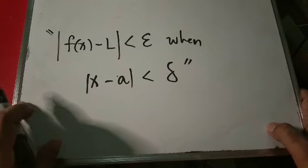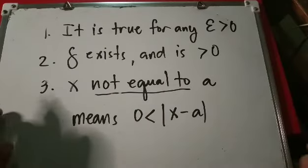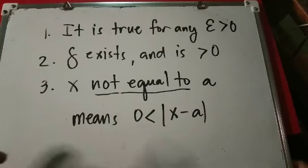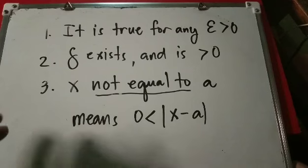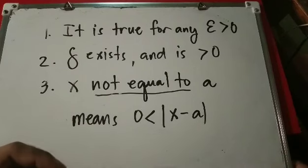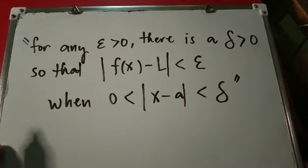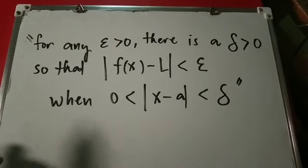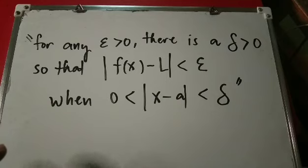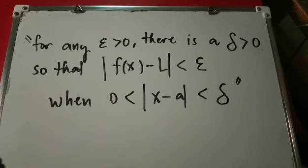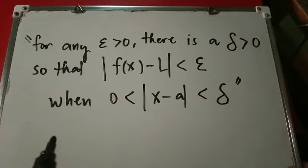If you understand that, you understand limits. But to be absolutely precise we need to add these conditions: number one, it is true for any epsilon greater than zero; number two, delta exists and is greater than zero; number three, x not equal to a means zero is less than the absolute value of x minus a. So the formal definition is: for any epsilon greater than zero, there is a delta greater than zero such that the absolute value of f of x minus L is less than epsilon when zero is less than the absolute value of x minus a, which is less than delta. It looks scary, but in essence it still says something simple: when x gets close to a, then f of x gets close to L.